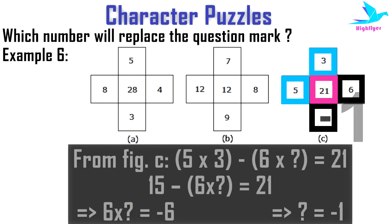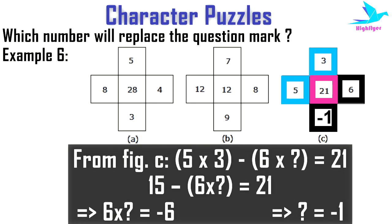In figure C it will be 5 × 3 − 6 × (required number) = 21. By solving this equation, the value of the required number is −1.